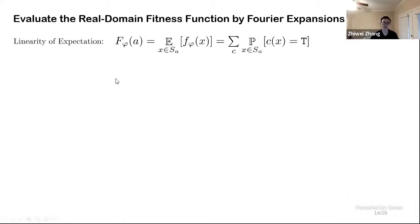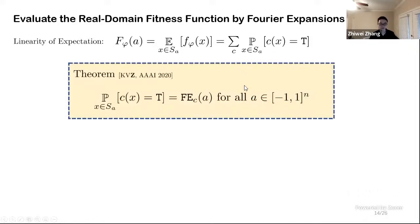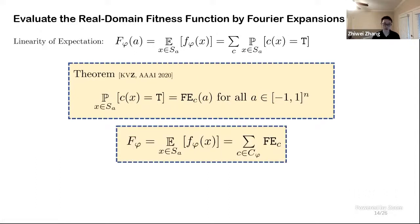So how does it help us to evaluate our objective function? Recall that we define our real domain fitness function by the expectation. So by the linearity of expectation, we can expand this representation to the sum of probability that each constraint is true under the space that we defined by A, the real vector. One of the contribution we made is that this probability can be computed exactly by evaluating the Fourier expansion, if we just use the same real vector A on both sides of the equation.